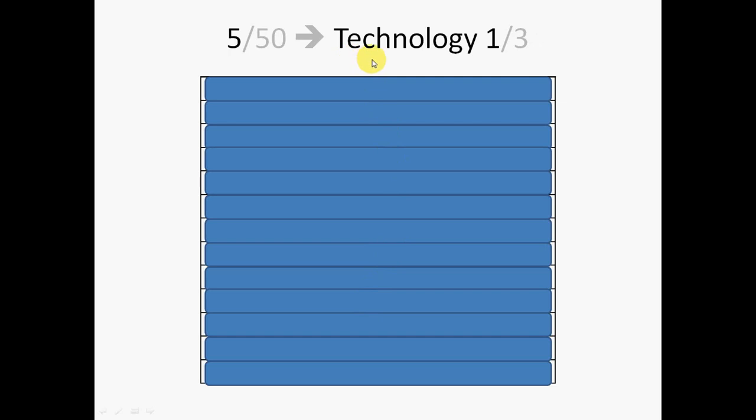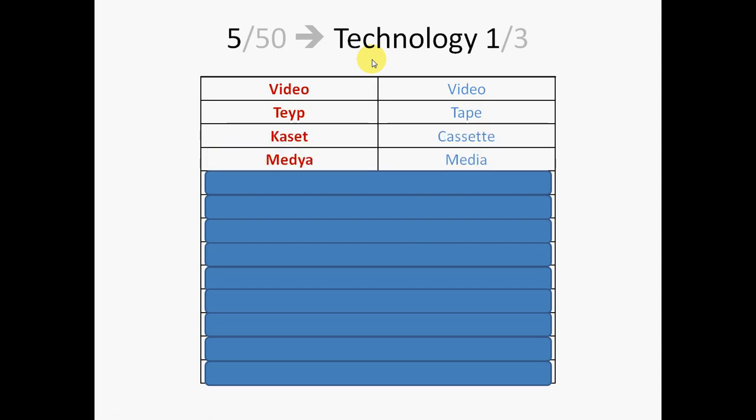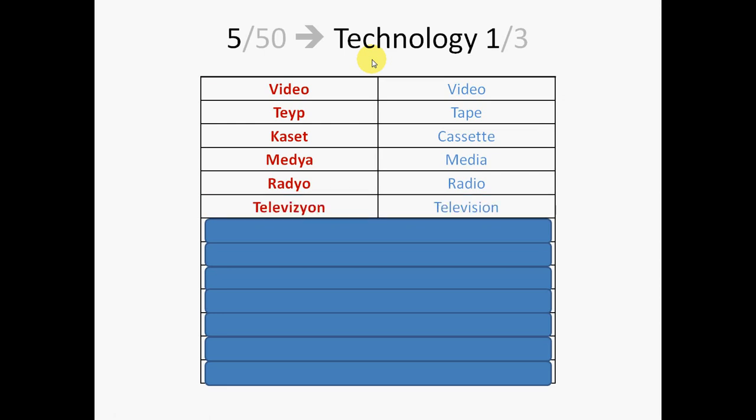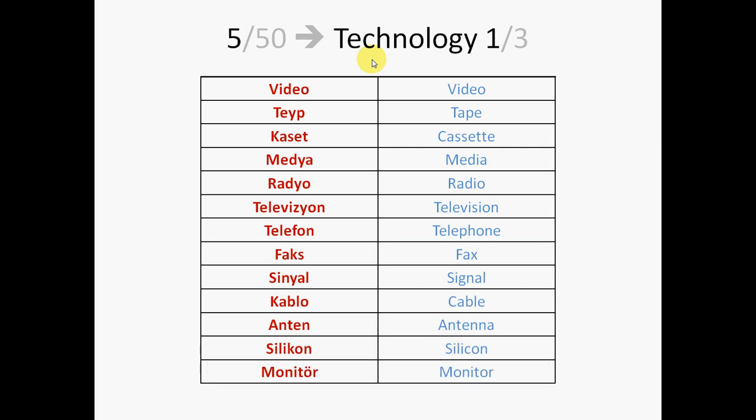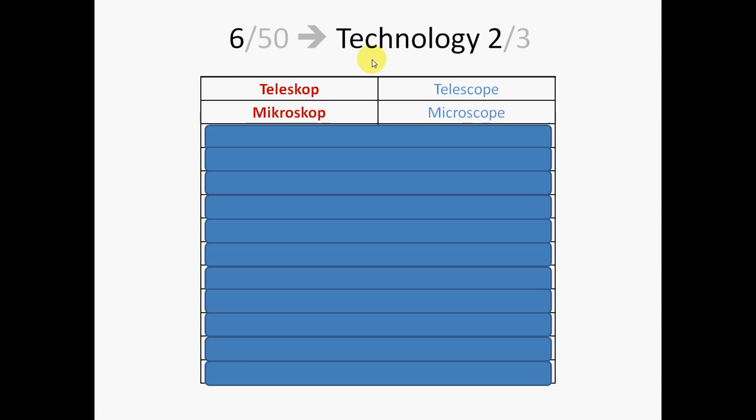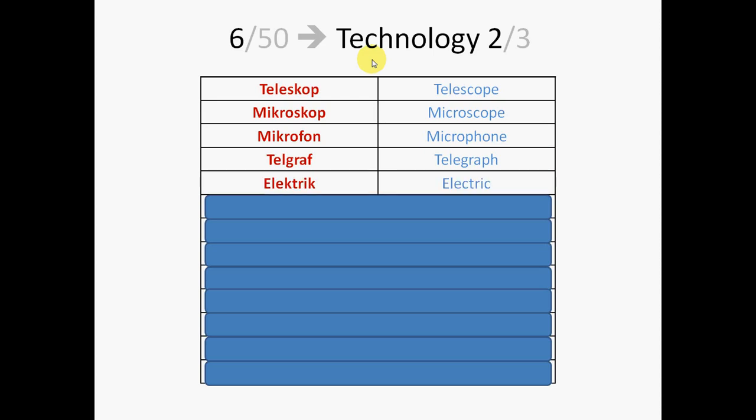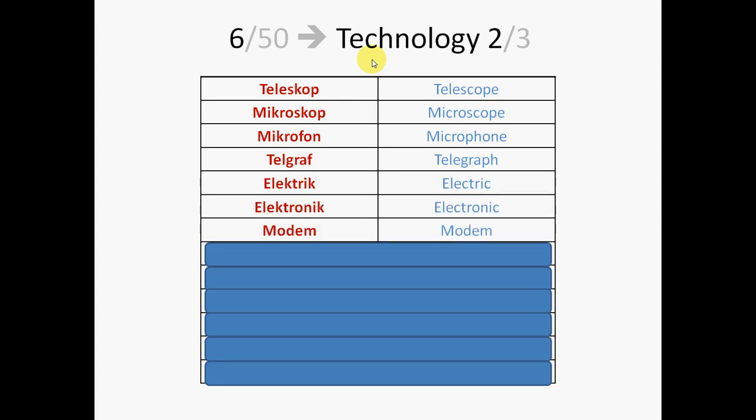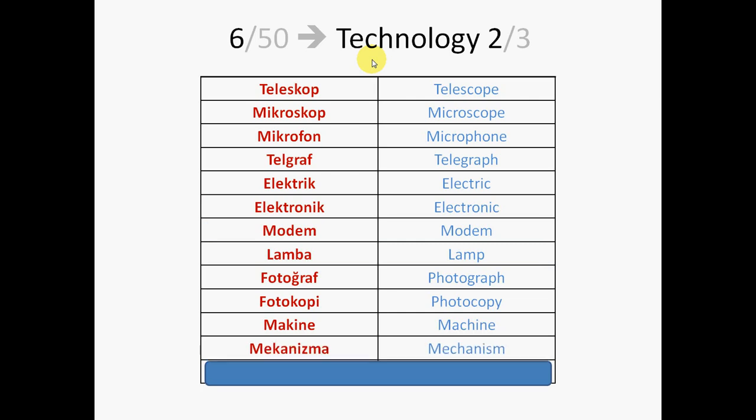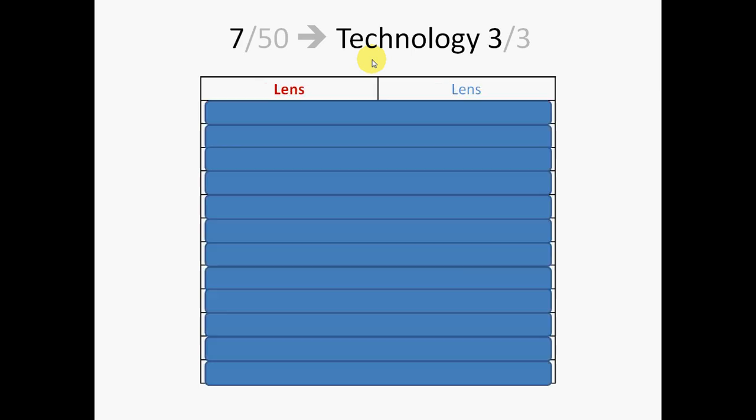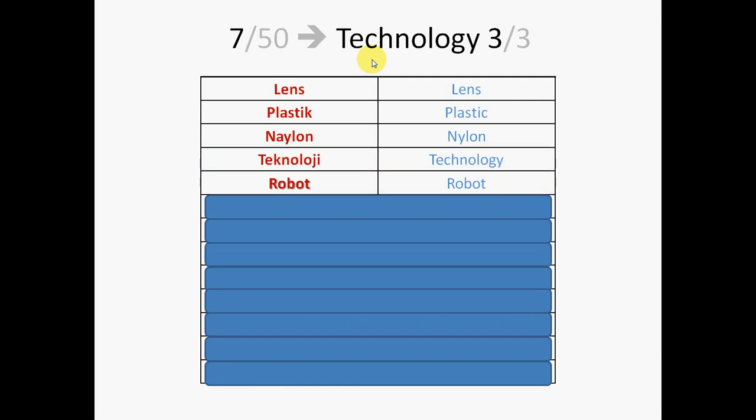Now, here is the next category, which is technology. Video. Or video. Tape. Cassette. Media. Radio. Televisión. Telefon. Fax. Signal. Kaplo. Anten. Silicone. Monitor. Telescope. Microscope. Microphone. Telgraf. Electric. Electronic. Modem. Lamba. Photograph. Photocopy. Makinne. Mechanizma. Mıknatıs. Lens. Plastic. Nylon. Technology. Robot. I made a mistake while reading this. In English you say robot, but in Turkish actually the intonation is different, so you should be careful about it. It is robot. So the stress is on the second syllable. Robot.